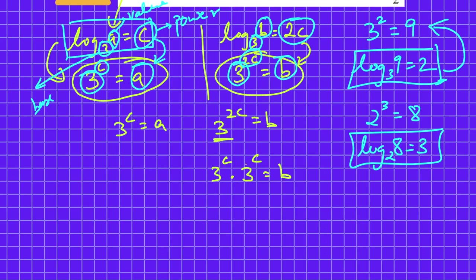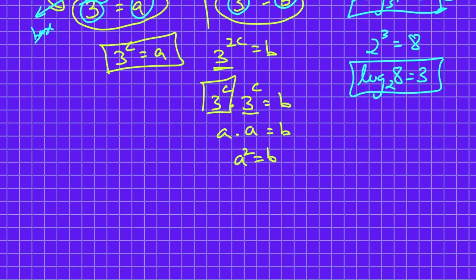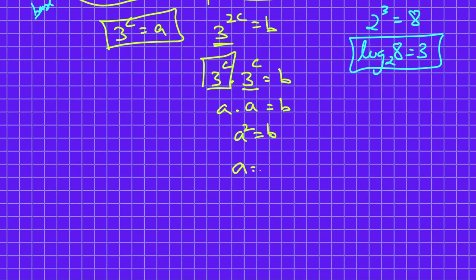So 3 raised to power 2C—each individual 3 raised to power C equals the value of A, so I can write this as A and I can even write this as A, and that equals B. So we got A squared equals B. Finally, our answer for A will be equal to the square root of B, so answer is D, square root of B.